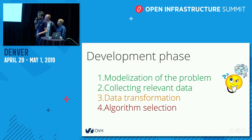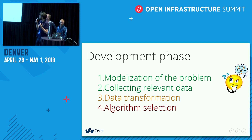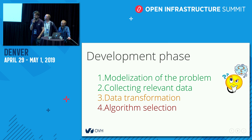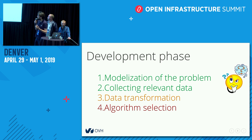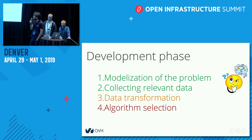First we start by modeling the problem: is it a regression, classification, clustering, or a mixture of everything? Then we need to collect data that's relevant to the subject — this is actually the fun part, where you have to think and engineer a solution. From there, you need to transform the data so that it can be processed by a machine learning algorithm. This requires some skill but it's always more or less the same thing.